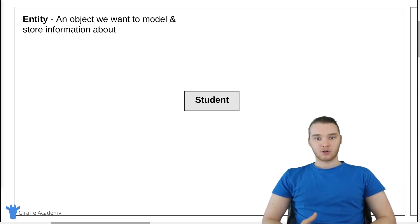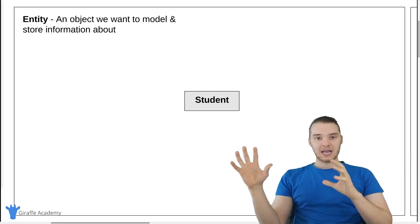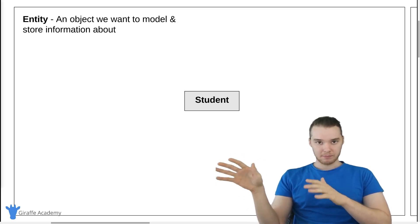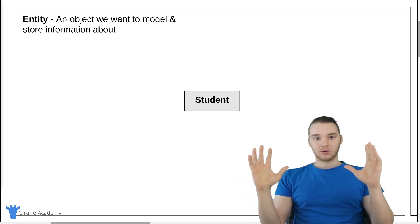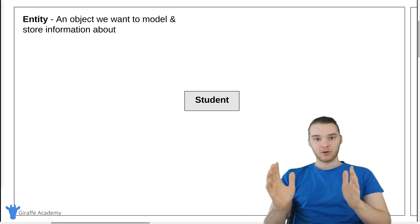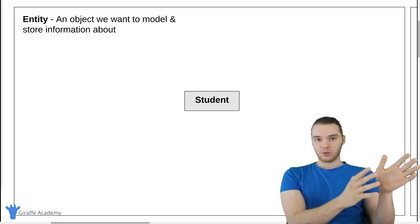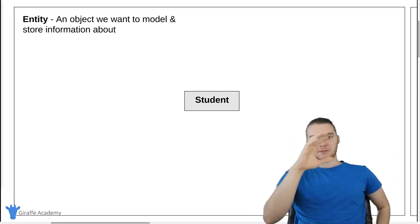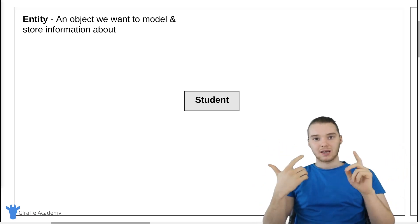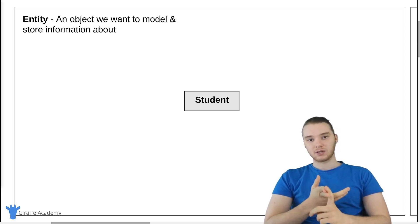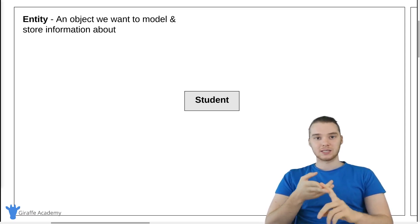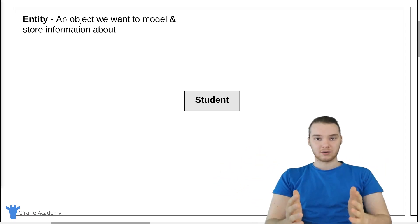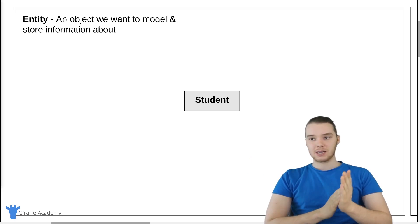So an ER diagram is a great way to take data storage requirements, like business requirements, and sort of convert them into an actual database schema. We can use the ER diagram to map out the different relationships, and the different entities and the different attributes for those entities. It can just be a really great way to organize our data into a database schema.